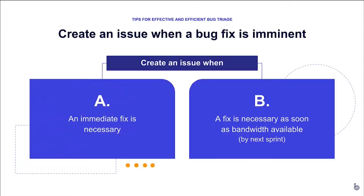When should you create an issue in your issue tracker? We recommend the following: if an immediate fix is necessary — in other words, if you triage a bug and say 'we have to do something about this now' — an issue should be created to track that intent to do work. Also, if a fix is necessary but not so urgent that you'll stop current work to get it done, but you're going to bring it into the current sprint or definitely plan it for the next sprint, both of those are great opportunities to create an issue.